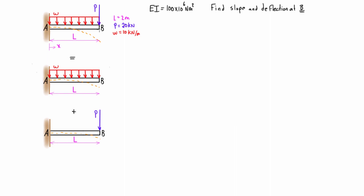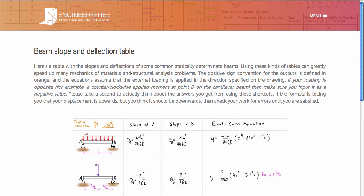For example, the deflection at point B for the actual system is going to be the deflection at point B under the distributed load plus the deflection at point B when subjected to just the point load. The same goes for the slope — the actual slope at B is the sum of the slope due to the distributed load and the slope due to just the point load. We're going to use a table to solve this problem.